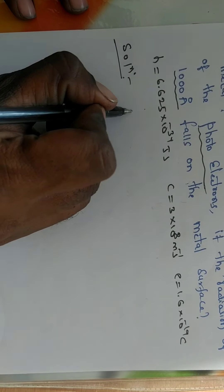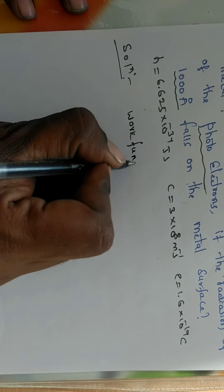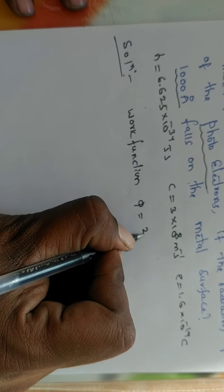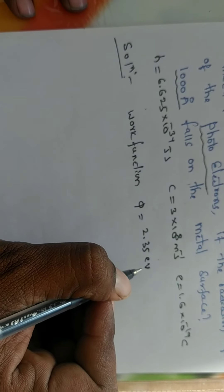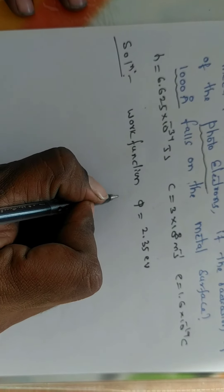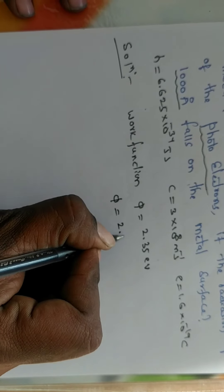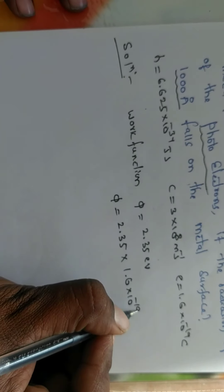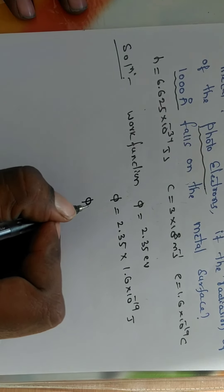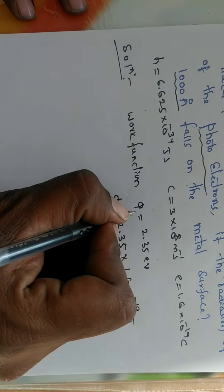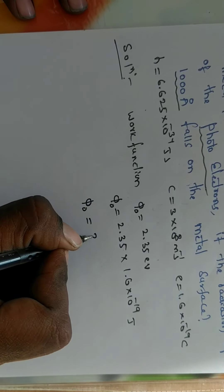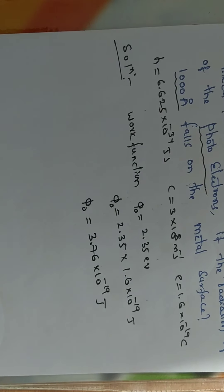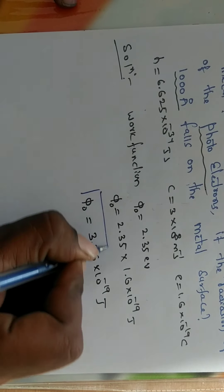Solution. Work function φ is equal to 2.35 electron volt. Convert this in terms of joules: work function is equal to 2.35 into 1.6 into 10 to the power of minus 19. So φ naught is equal to 3.76 into 10 to the power of minus 19 joule. This is the work function value in joules.